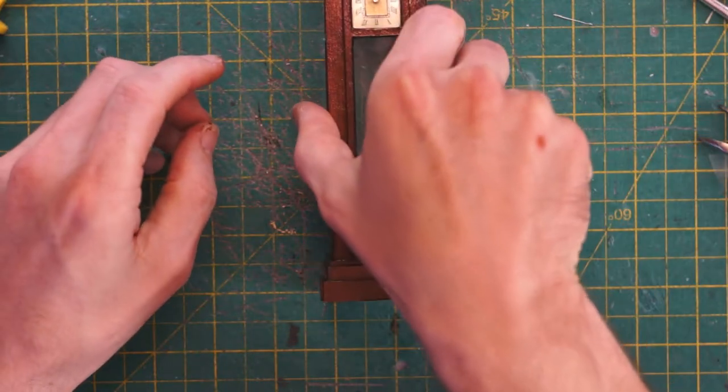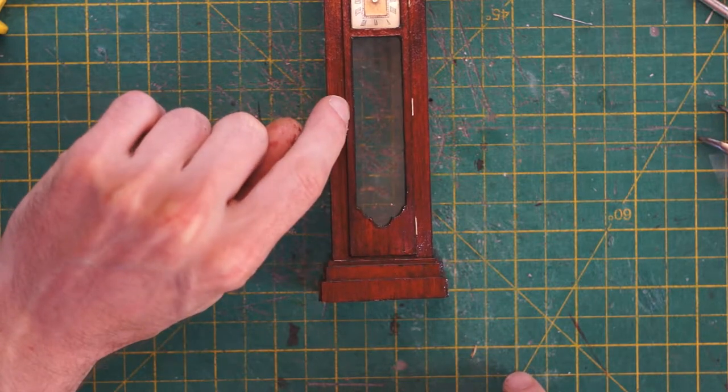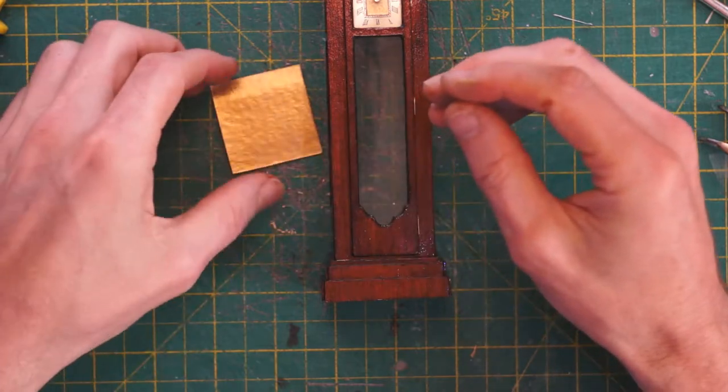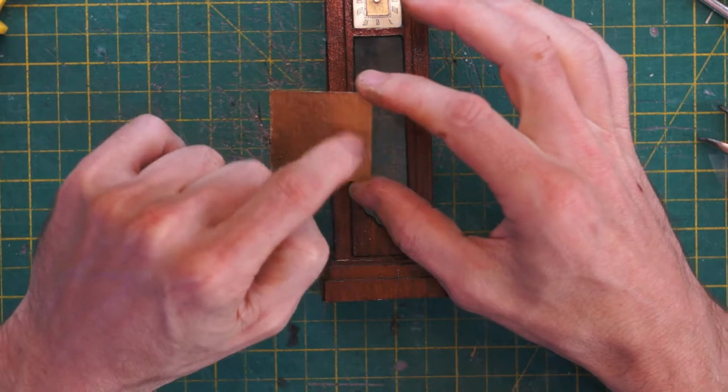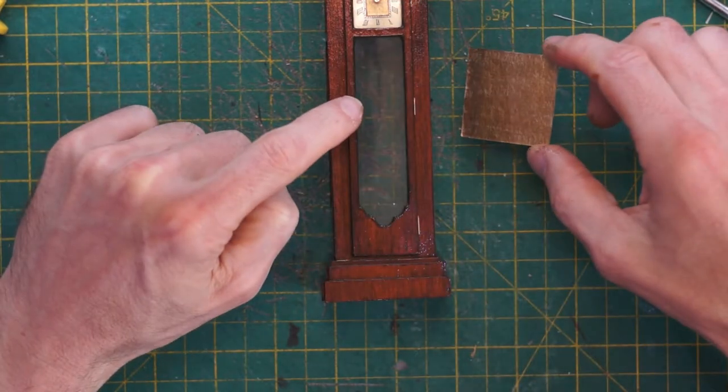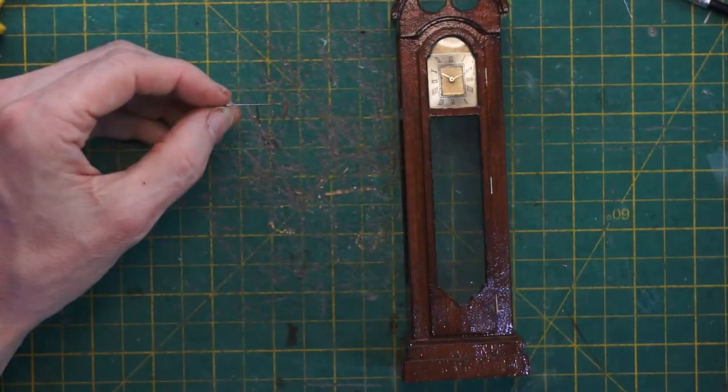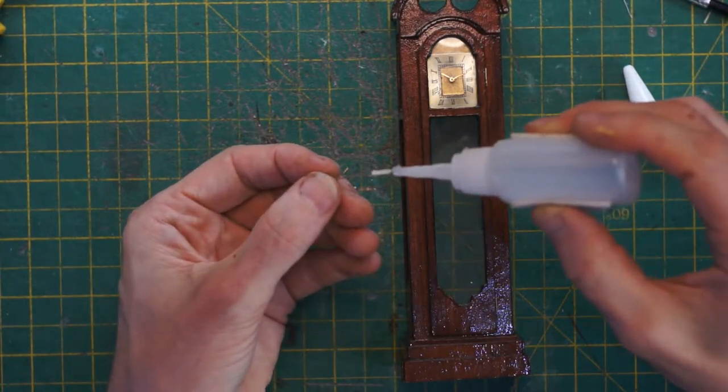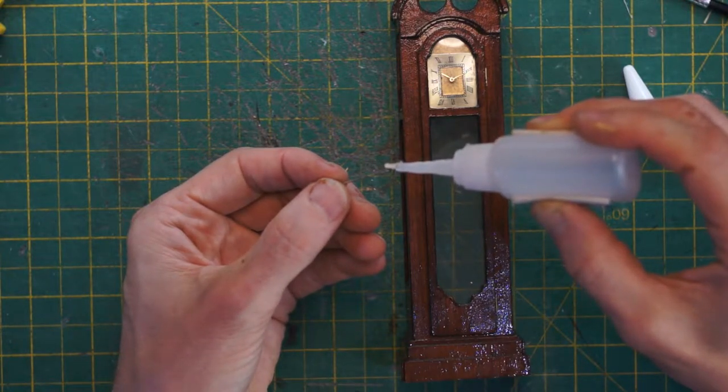And if we've got a hinge on one side, I suppose we're going to need a little lock mechanism on the other side. So, I've got this piece of scrap gold and I'm going to somehow cut an incredibly small little lock plate out of it. As you can see, it's ridiculously small. And I'm just going to stick that in place again with a minute amount of superglue.